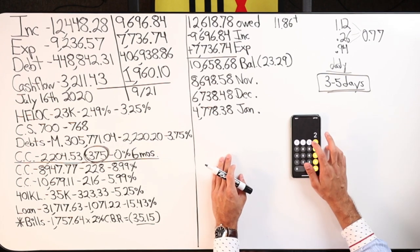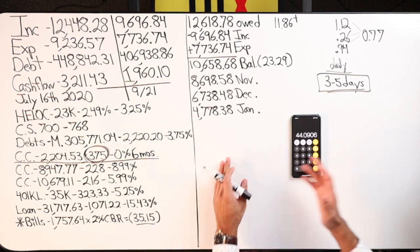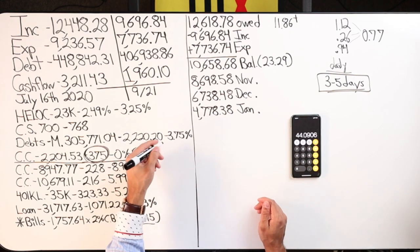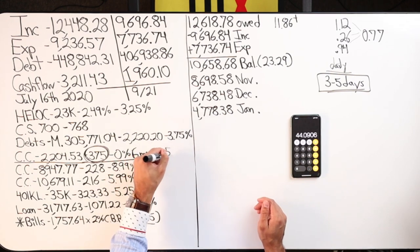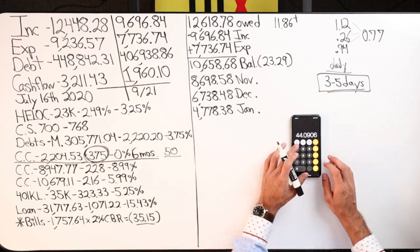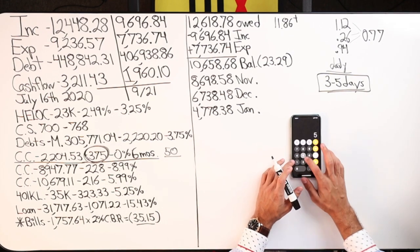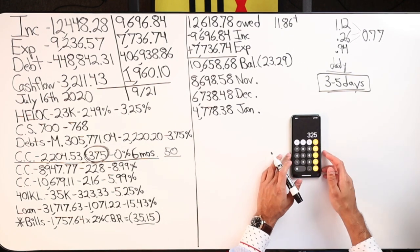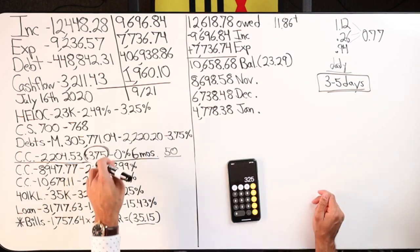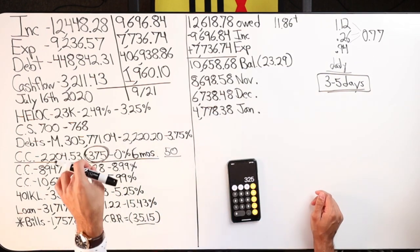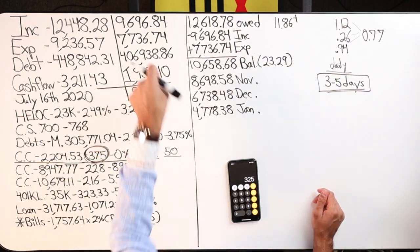Which is probably anywhere from roughly one to 2% of the balance. So it's probably going to be like $50 bucks a month, probably less than that. Let's call it $50. $375 minus $50 is $325. I can reroute $325 back to the cash flow.